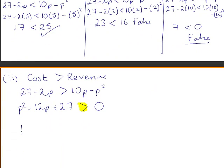So we write that p is less than 3 or p is greater than 9. A price that is less than 3 euro or a price that is greater than 9 euro will produce a loss. You can check your answers in the same way as we did for the first part of the question.